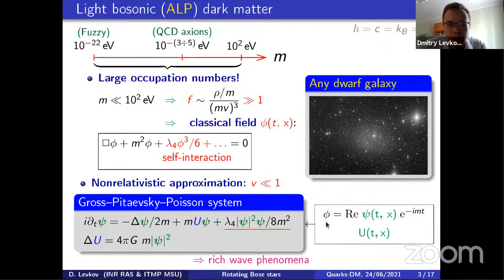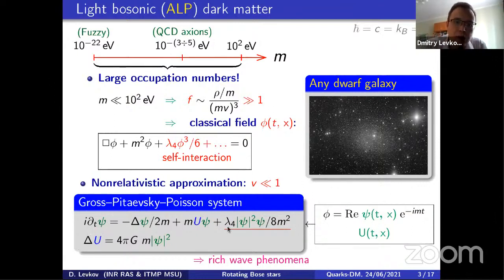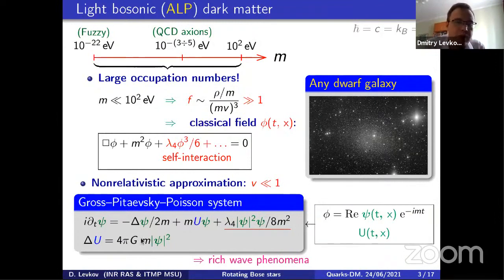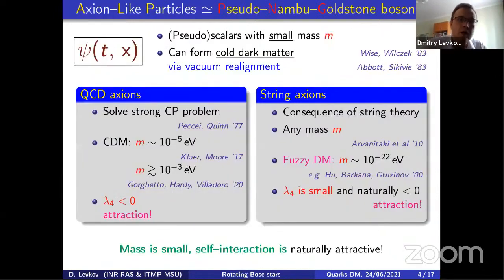A further simplification is the non-relativistic approximation. You expand in velocity and trade the relativistic field φ for a non-relativistic complex field ψ, which satisfies a Schrödinger-type equation. If self-interaction of the condensate is present, this becomes a nonlinear Schrödinger equation. It couples with the Newtonian potential U satisfying a Poisson equation — the Gross-Pitaevskii–Poisson system, which universally describes all light dark matter phenomena.